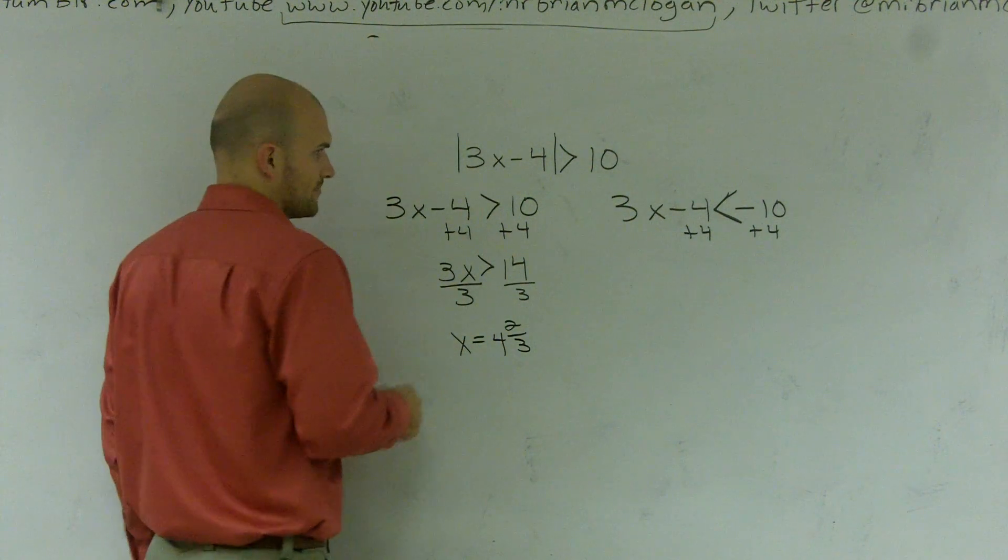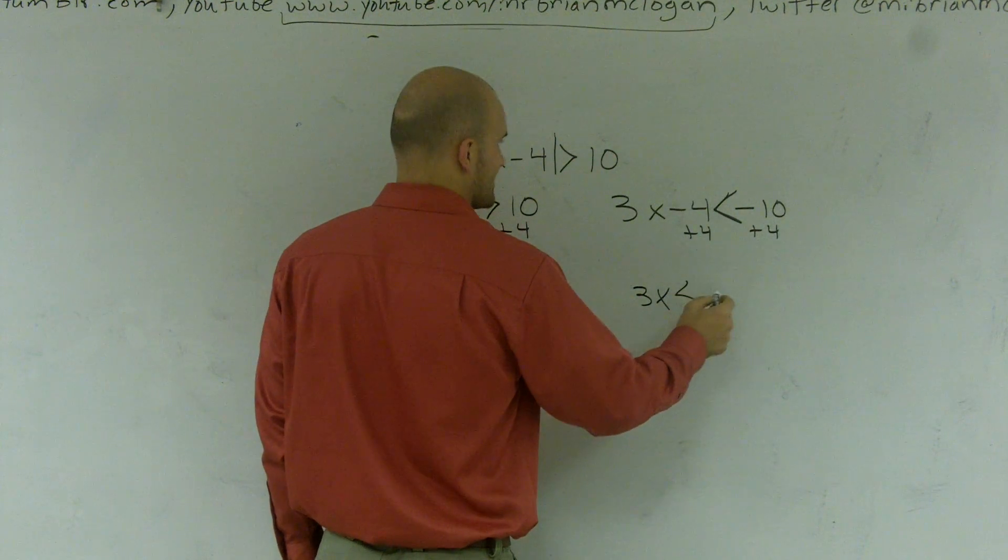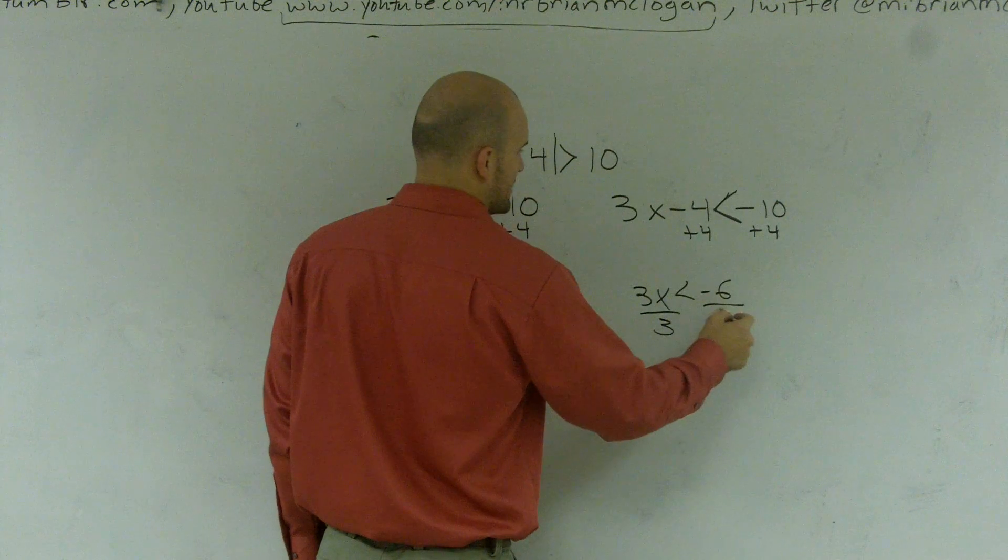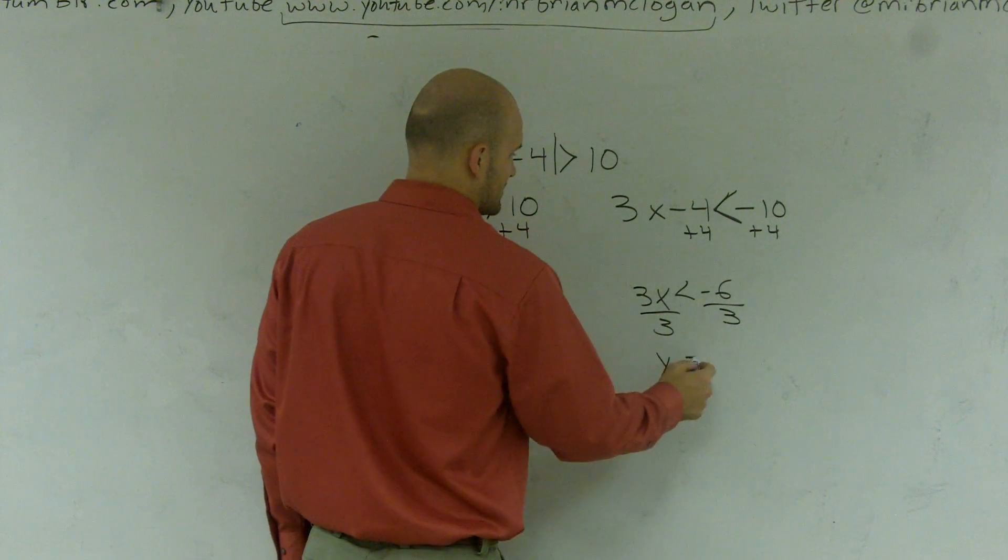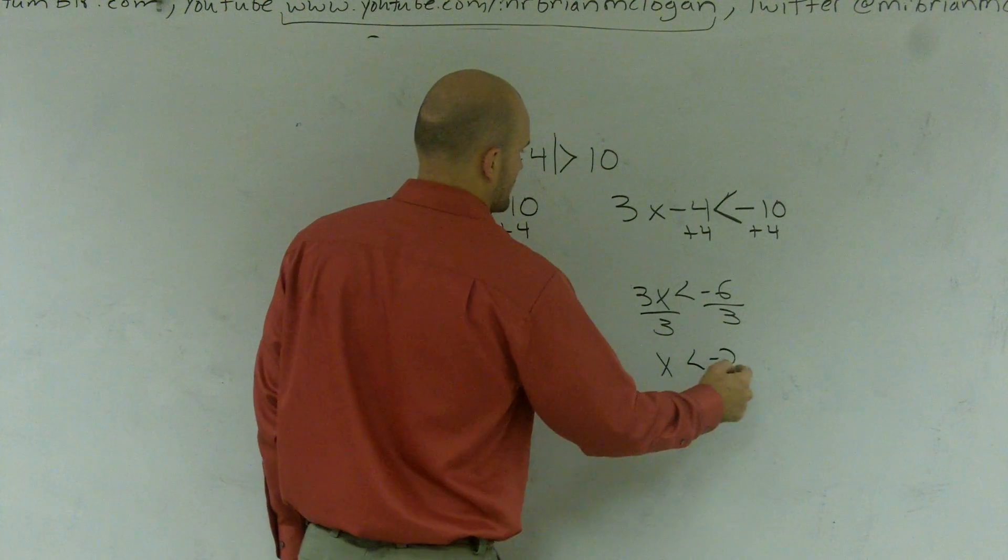x is going to equal 3 goes into 14 four times and 2 thirds, so 4.66. And then here I get 3x is less than negative 6 divided by 3. And I get x is less than negative 2.